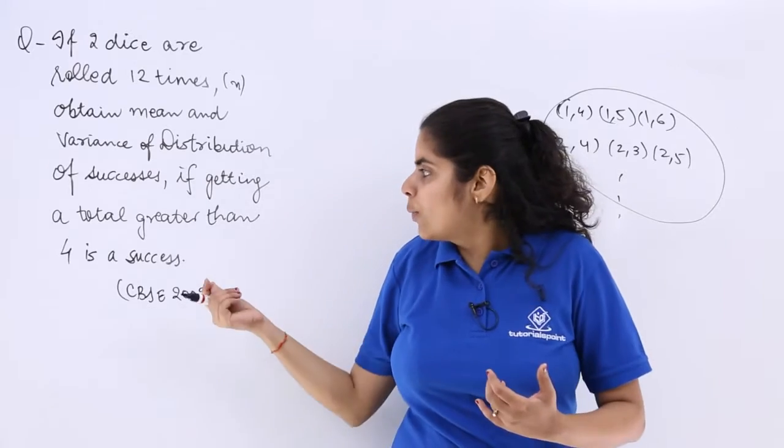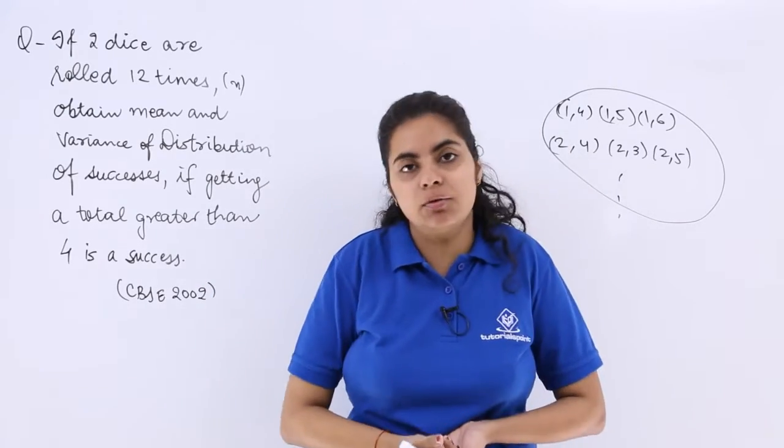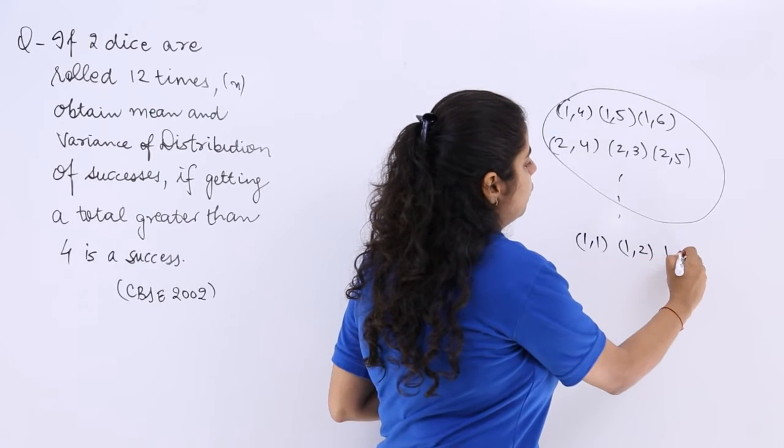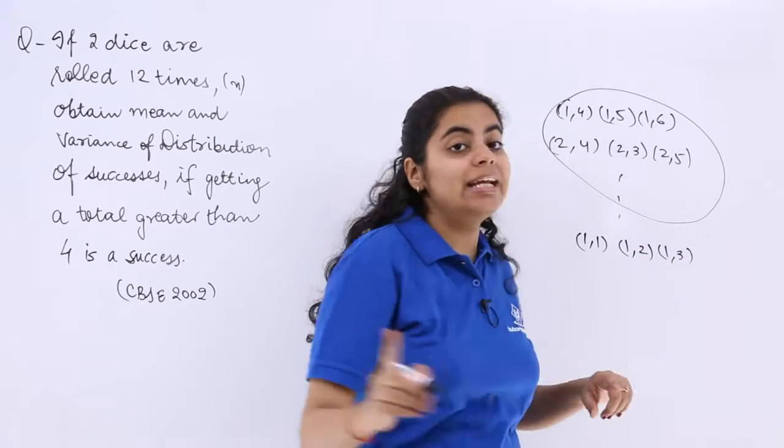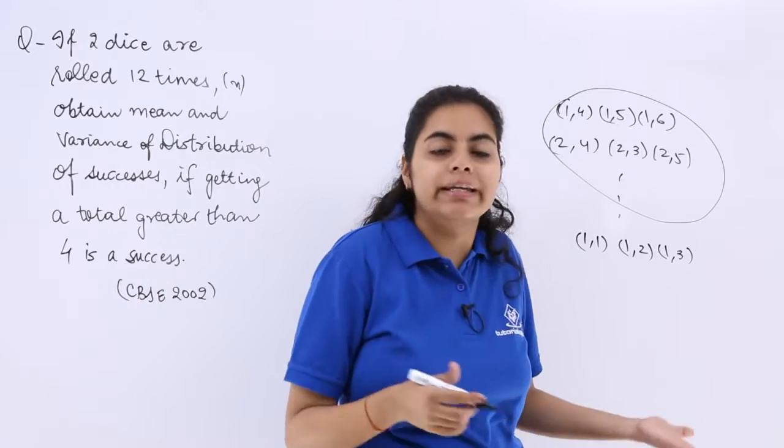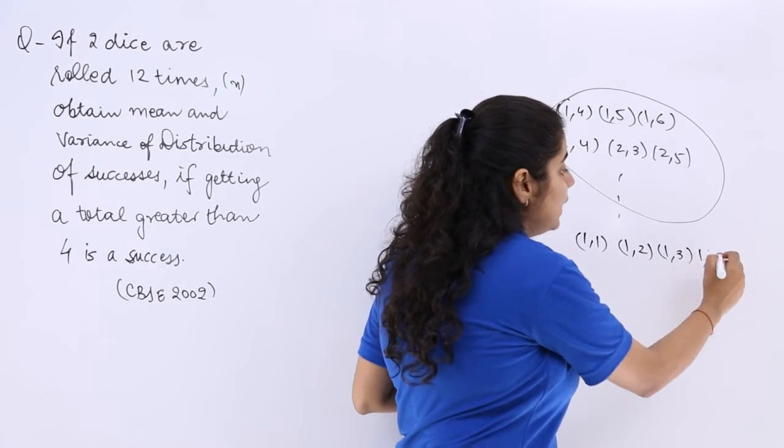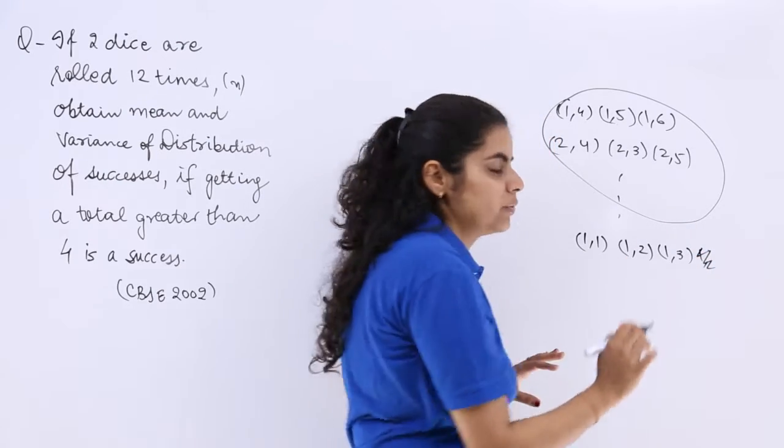So better, we see when do we not get 4. We don't get greater than 4 in the cases (1,1), (1,2), (1,3), and even it said greater than 4, so when do we not get greater than 4 means we can also get equal to 4. Now after that it will be greater than 4.